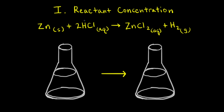There are several factors that can affect the rate of a reaction. One factor is the concentration of a reactant. Most chemical reactions proceed faster when the concentration of one of the reactants is increased. For example, let's look at the reaction of solid zinc with hydrochloric acid to form an aqueous solution of zinc chloride and hydrogen gas.